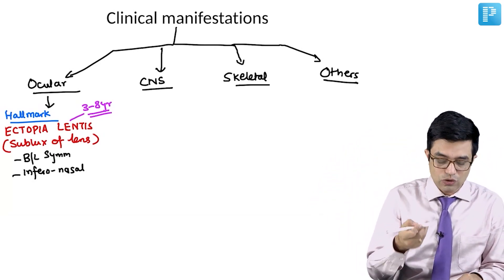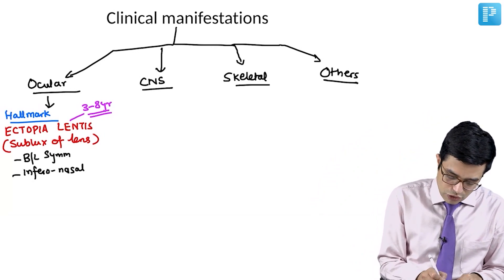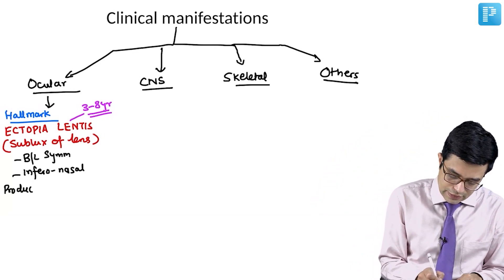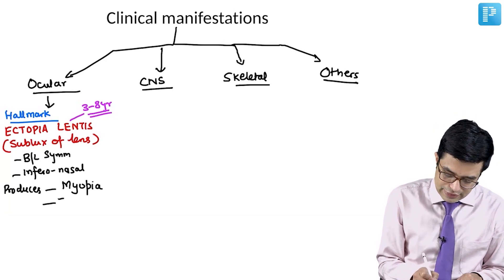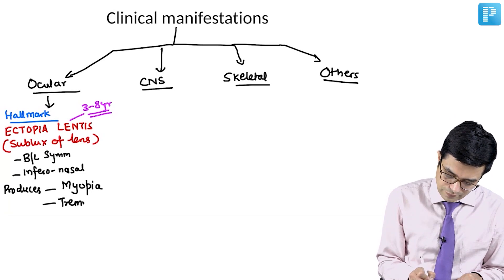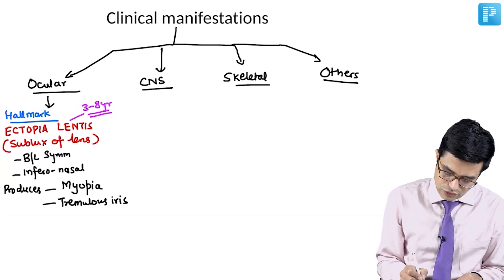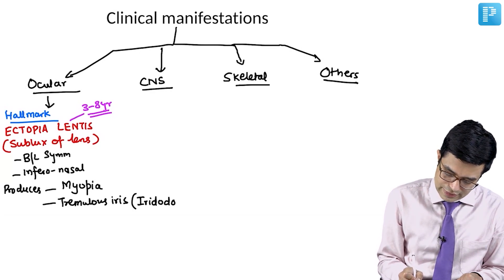And what does ectopia lentis lead to? It produces severe myopia in the child and it produces tremulous iris which is also called iridodonensis.